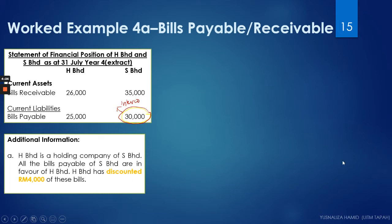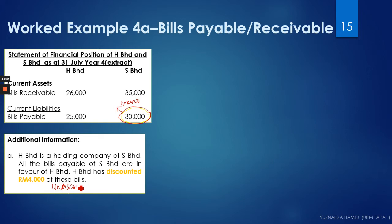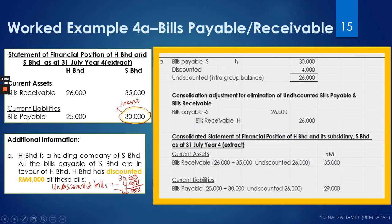All the bills payable are in favor of H. H has discounted 4,000 of bills. When we do consolidation adjustment, we need to do the adjustment for the undiscounted bills. So the undiscounted bills would be 30,000 — the total intercompany bills — minus 4,000 discounted, leaving 26,000 as the undiscounted bill. So: bills payable 30,000, discounted bill 4,000, undiscounted intragroup balance to cancel off is 26,000.